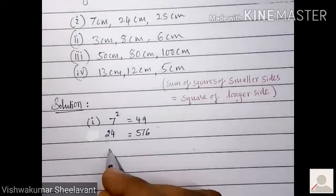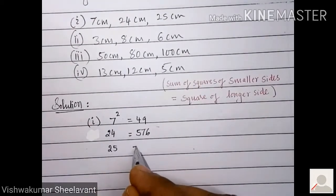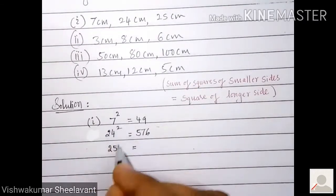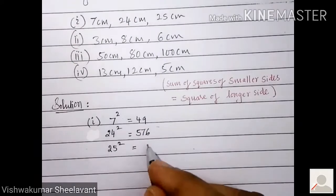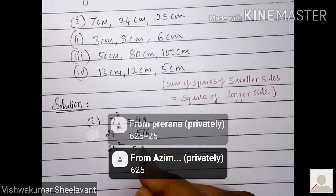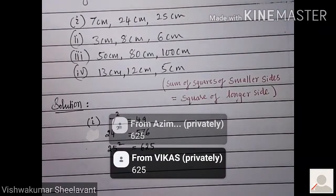And we are having longer side as 25. 25 square is how much? It is 625. Very good.